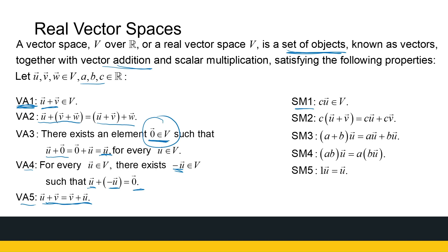Now let's look at the scalar multiplication axioms. The first is also about closure: any scalar times a vector must again be in the set, so the set must be closed under scalar multiplication. Note we're not multiplying vectors — it's a real number times the vector, however that's defined. The second axiom: C times (U plus V) equals C times U plus C times V, similar to a distributive idea.